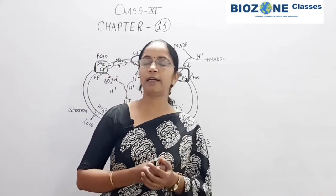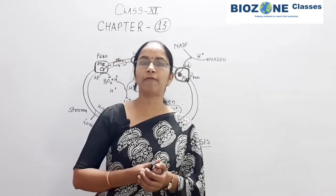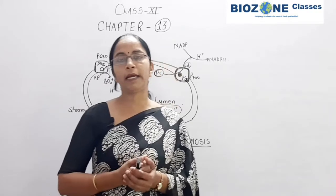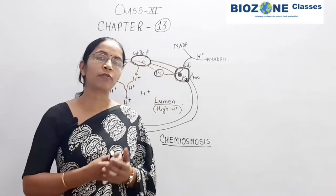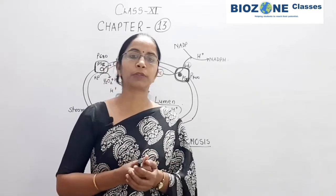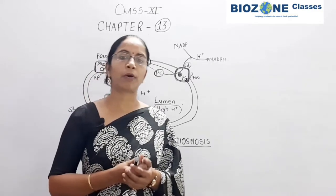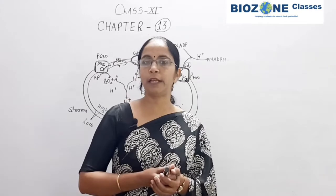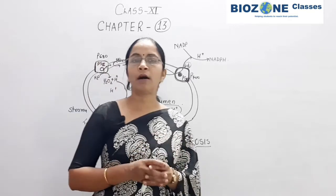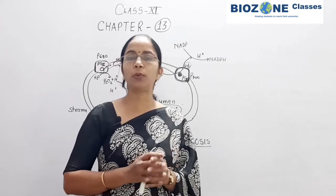As we discussed in our last sessions, the light reaction is mainly responsible for the conversion of radiant energy in the form of ATP and NADPH. Here we study what chemiosmosis theory is, and this theory is mainly used for the explanation of ATP generation. When we study ATP generation, you should be clear about the electron flow between PS2 and PS1.